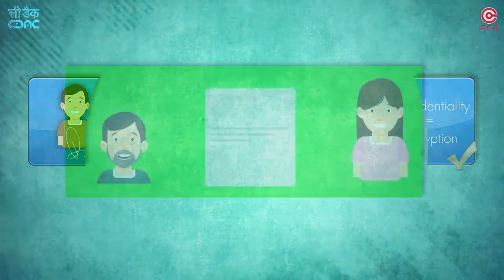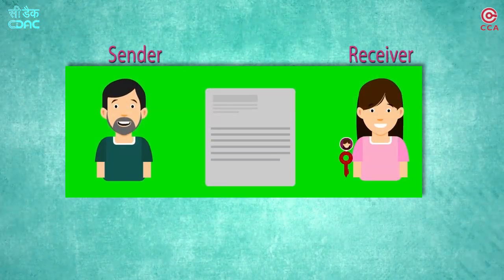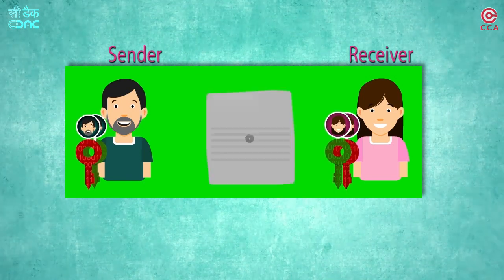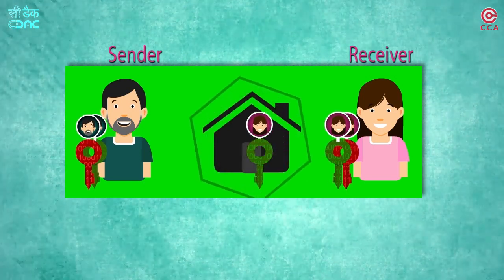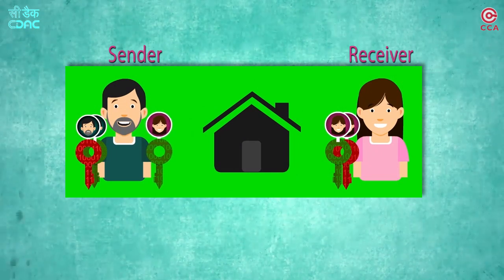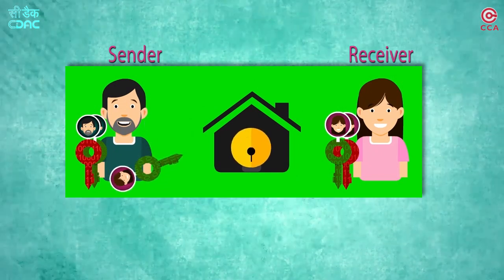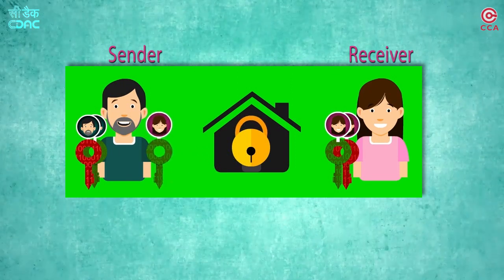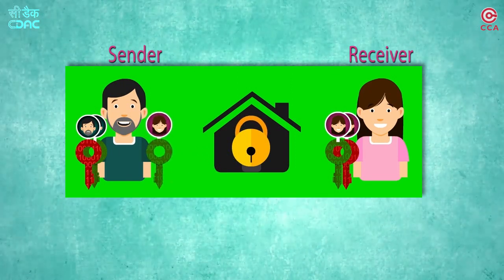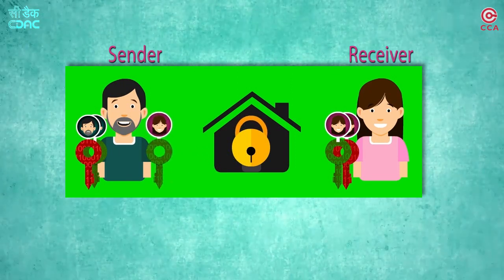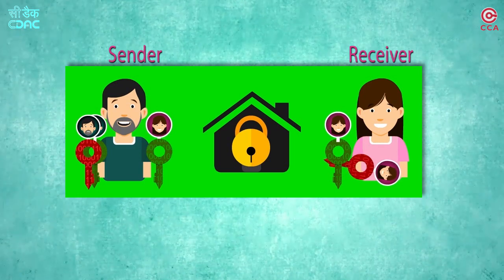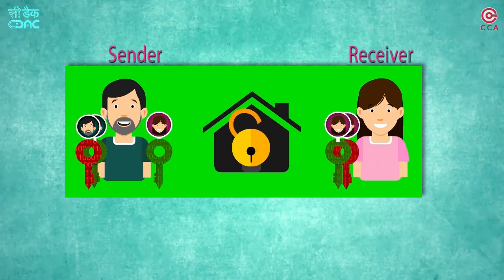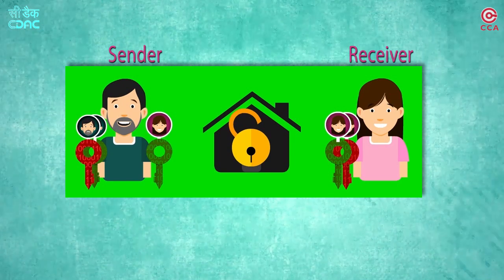Let's take an analogy from the asymmetric crypto system to understand this. If somebody wants only you to access a room, a resource or a document, that user can lock it with your public key, ensuring that only you can unlock it with your private key. This way, the secrecy of the communication is achieved and only the intended recipient can decrypt it.